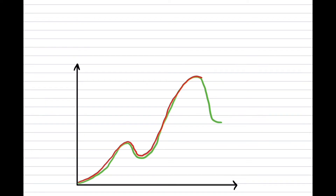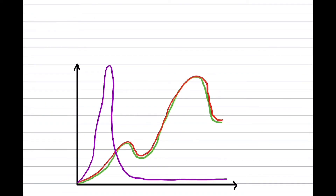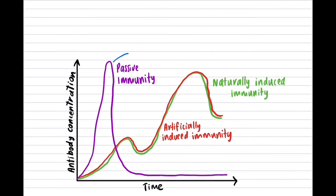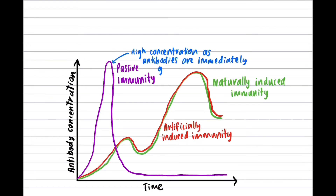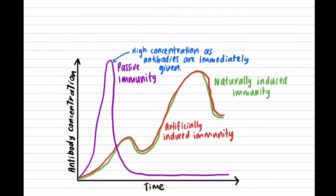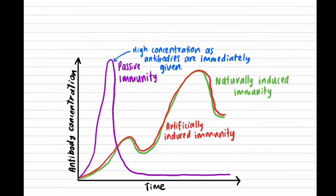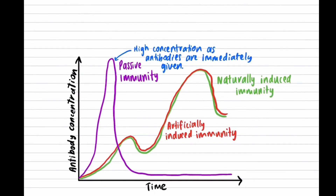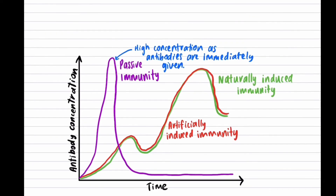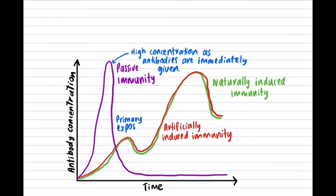This graph shows three types of immunity: in purple is passive immunity, in green is naturally induced active immunity, and in red is artificially induced active immunity through a vaccine. Passive immunity shows an initially high concentration of antibodies, because antibodies are immediately given as an injection after contracting a dangerous disease such as hepatitis A. Such a dangerous disease must be immediately treated with these antibodies rather than relying on the body to produce its own, which is too time-consuming. Active immunity can be acquired by exposure to the pathogen from the environment or a vaccine.